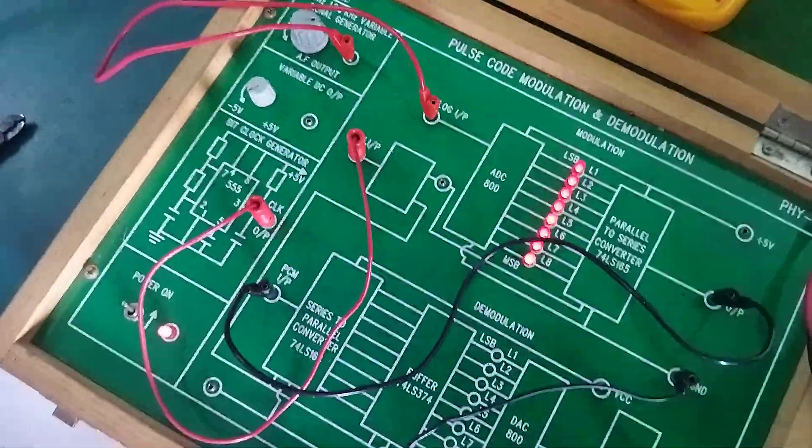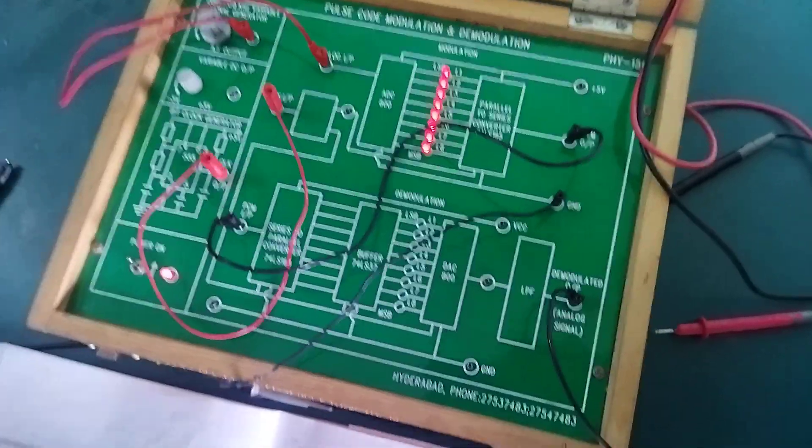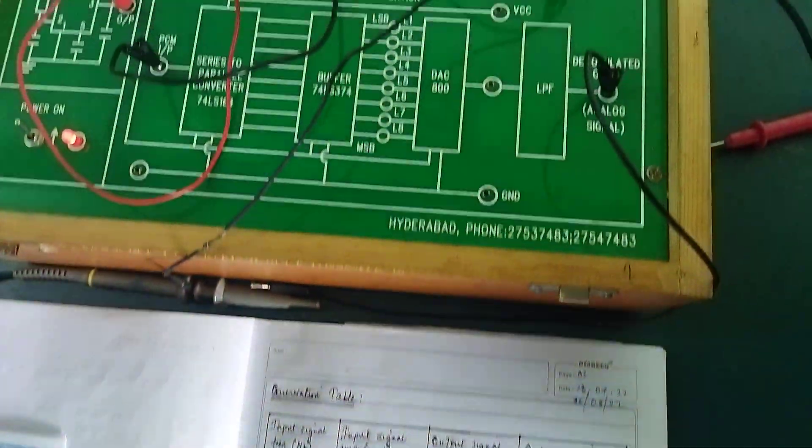In PCM, the first part is transmission and reception. The second part is the study of ADC and DAC using PCM kit. The circuit is almost the same.